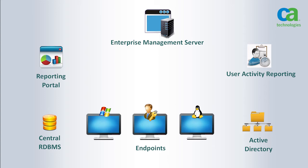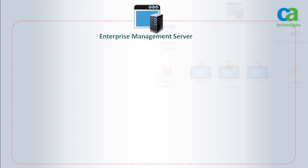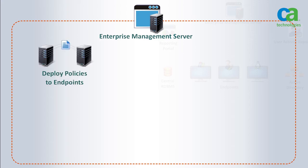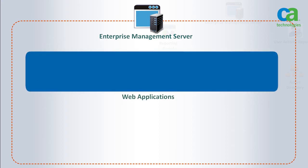Let's examine each of these components in great detail. The enterprise management server is a core component of CA Control Minder. It is used to deploy policies to endpoints, manage privileged accounts, and control UNIX host authentication. The enterprise management server performs all these functions by using three components. The first component is web-based applications.